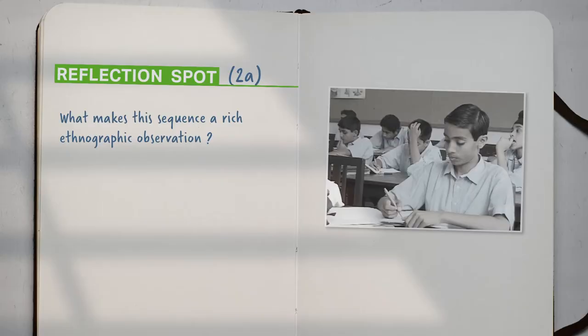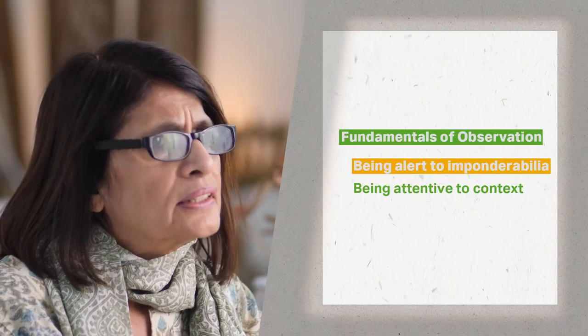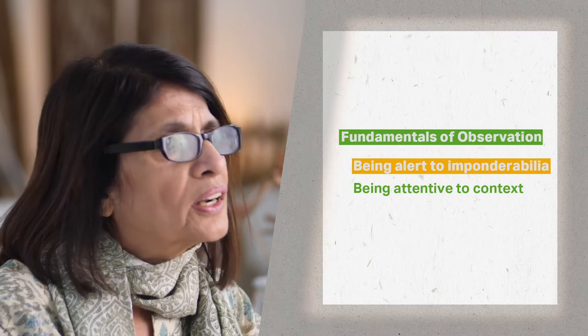Let us reflect on what we just saw. Can you note down what makes this sequence a rich piece of observation? Many of you may point out the details that the filmmakers observe — some may have noticed the students' expressions while the teacher is asking questions, others could have noted how the students engage with what the teacher is explaining. These are all very important details and constitute the imponderabilia of the classroom. The decision of the filmmakers to pay attention to these is evidence of a rich ethnographic observation.